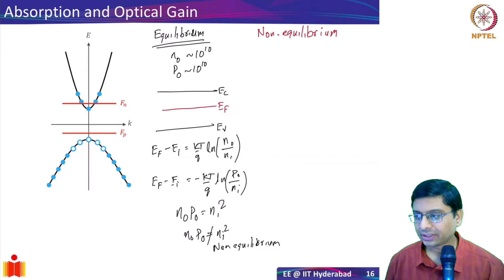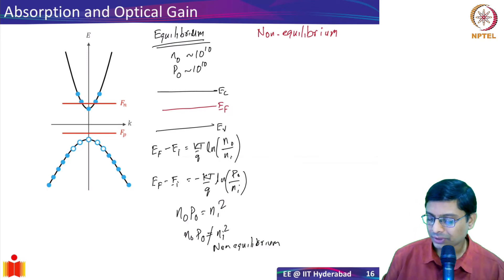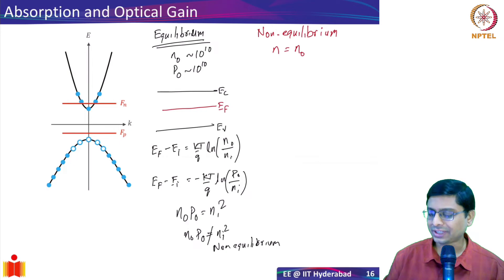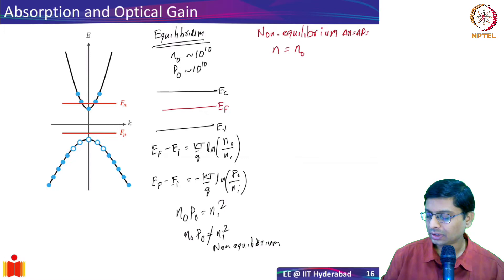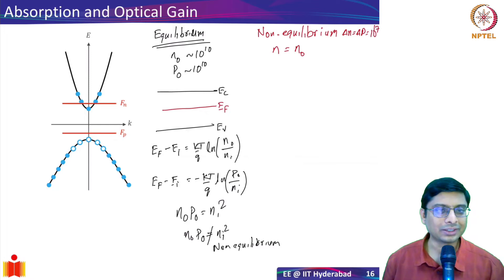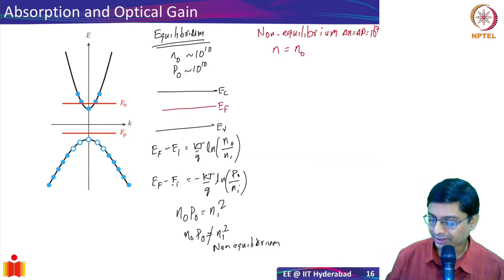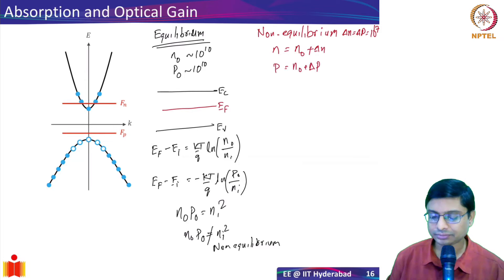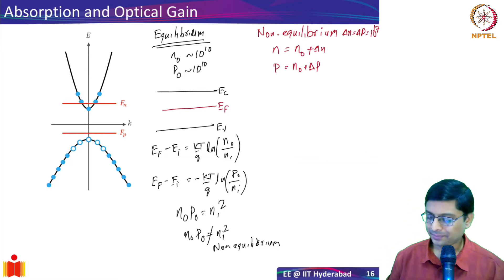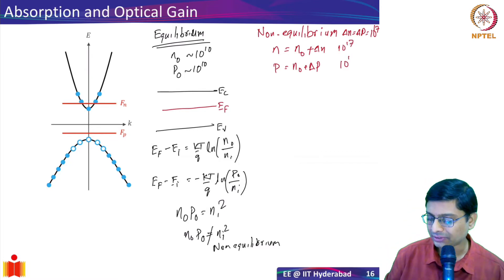If I shine photons in this scenario, the electron density becomes n = n₀ + Δn and hole density becomes p = n₀ + Δp. If I introduce, say, Δn = Δp = 10^16 or 10^17 per cm³, then both n and p are roughly 10^17 per cm³.